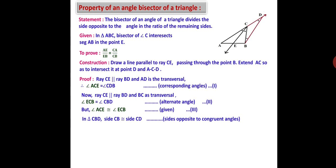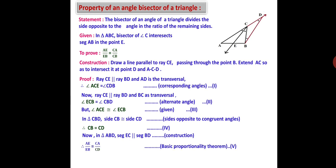But angle ACE is congruent with angle ECB — given, statement 3. In triangle CBD, side CB is congruent with side CD, i.e., sides opposite to congruent angles. Therefore CB = CD — statement 4. In triangle ABD, segment EC is parallel to segment BD (by construction). Therefore, AE/AB = CA/CD by the Basic Proportionality Theorem — statement 5. Substituting CD = CB from statement 4, we get AE/AB = CA/CB, which is the angle bisector theorem.